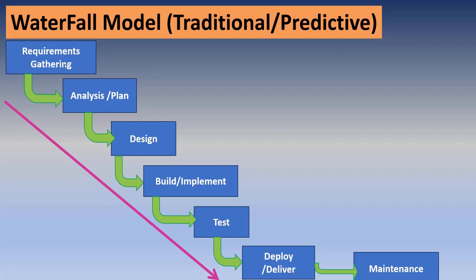For example, in a one or two year project, you have two months for the requirements phase, three months for the planning phase, three months for the design phase, and then implementation begins. Once the design phase is complete, implementation starts. For six months, the developers implement the entire project.